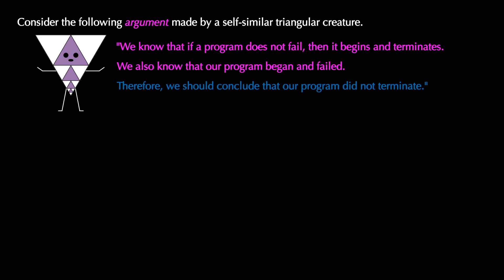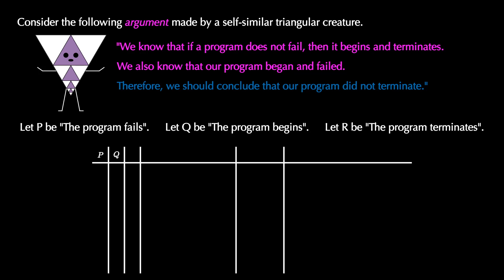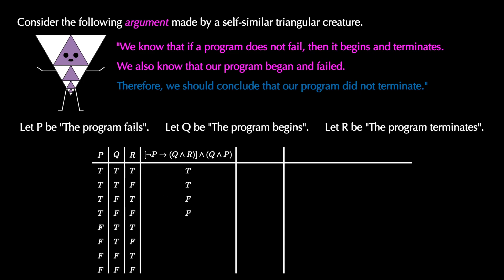To determine if this is a valid argument, let's set up some basic propositions. Let P be the proposition the program fails, Q be the proposition the program begins, and R be the proposition that the program terminates. We build a truth table for these three propositions with eight rows. The first premise is not P implies Q and R, and the second premise is Q and P. We fill in the truth table for these two premises.